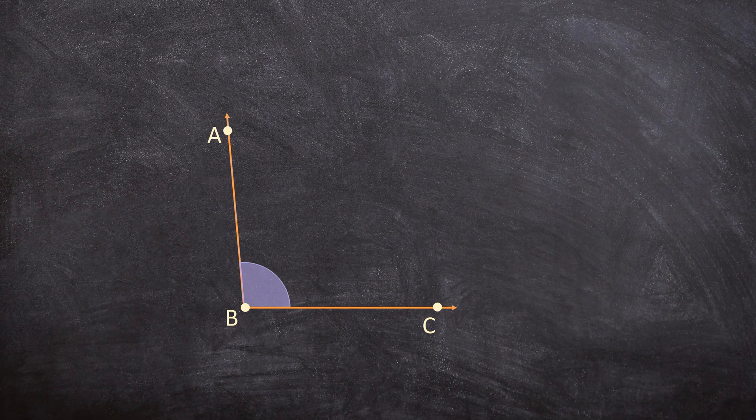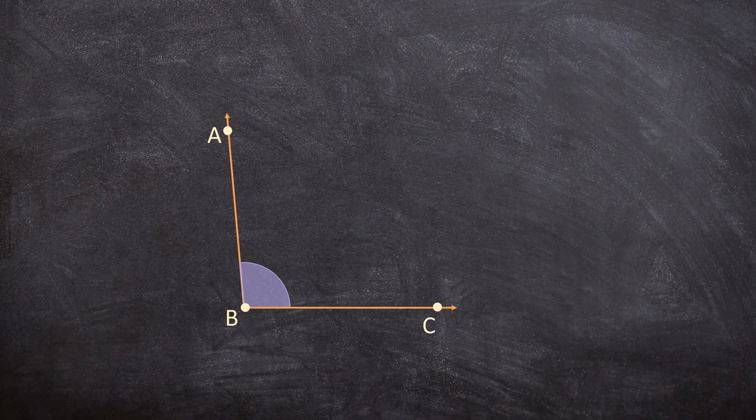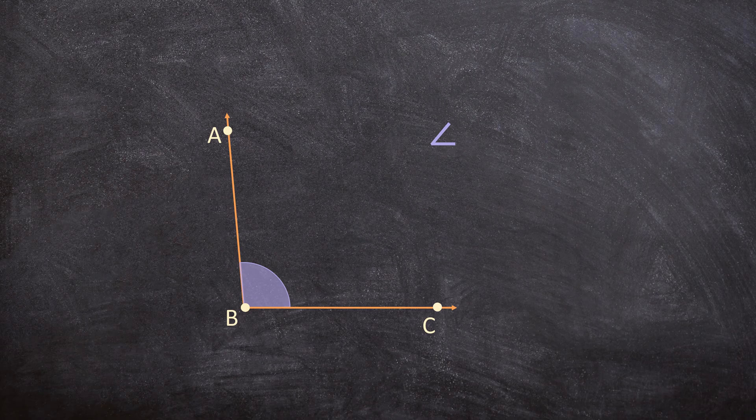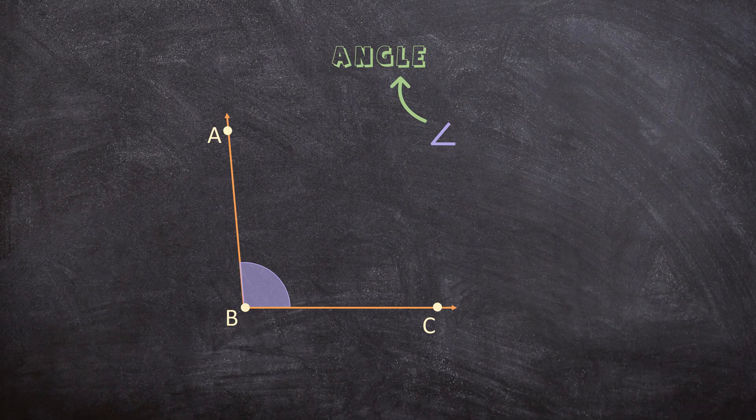When you are naming an angle you always want to start with this symbol. This symbol is a universal symbol that means angle. So you are starting with angle and then you give the rest of the name.